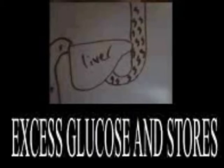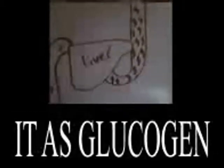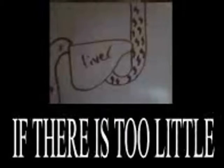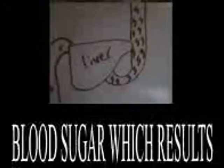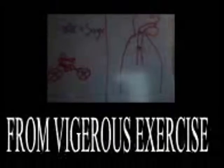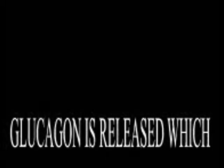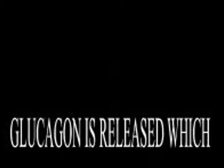The liver takes the excess glucose and stores it as glycogen. If there is too little blood sugar, which results from vigorous exercise, glucagon is released, which increases blood sugar levels.